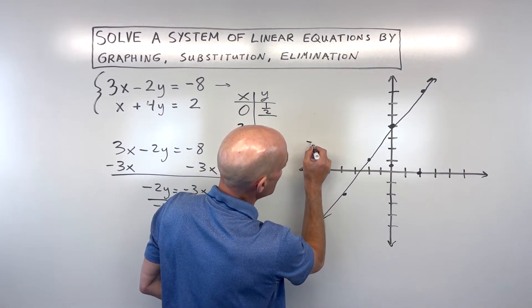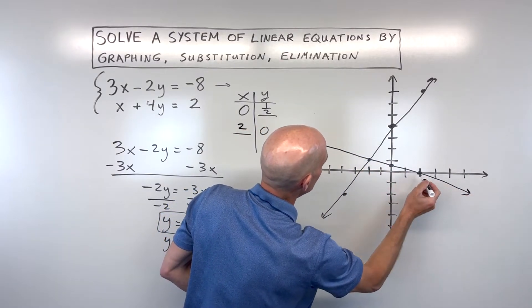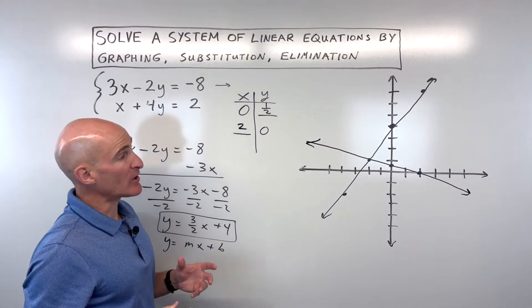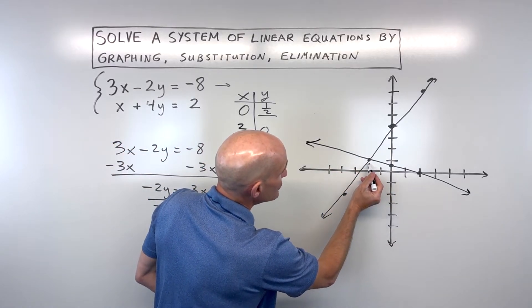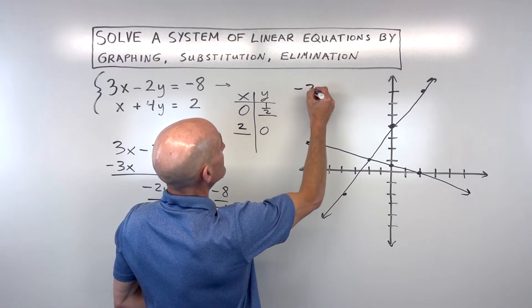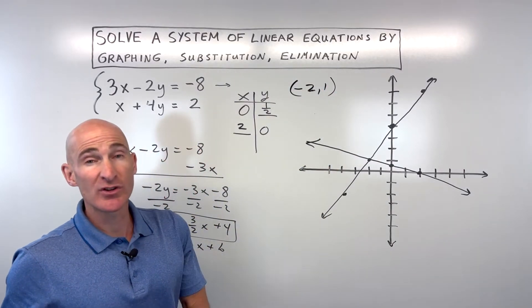And now you can see if I graph this line, it looks something like that. And we can find the point of intersection, which here looks to be at negative 2, positive 1. And we solved the system using the graphing method.